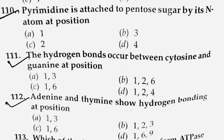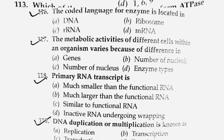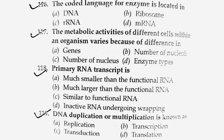Next question: Adenine and thymine show hydrogen bonding at which positions? Adenine and thymine show hydrogen bonds at positions 1 and 6. The answer is option number C.